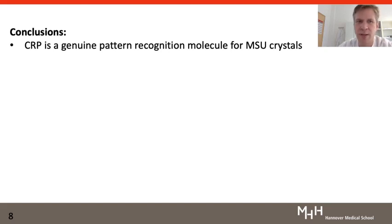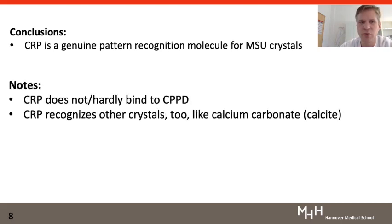With this, I want to close and conclude that we think that CRP is a genuine pattern recognition molecule for MSU crystals, indicating that the immune system may be able to use protein recognition molecules to detect crystals. Two notes I could not show data for is that CRP does not or hardly binds to CPPD, indicating that the effect on inflammation would be different during gout or pseudogout. Still CRP does recognize other crystals. I also mentioned the binding of CRP to cholesterol has been shown before. And we found here another crystal that behaves similar to MSU in regard to CRP, which was calcium carbonate or calcite. This just indicates that CRP does not recognize the uric acid molecule but rather some kind of surface properties.